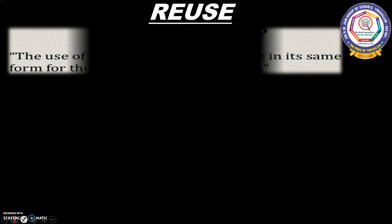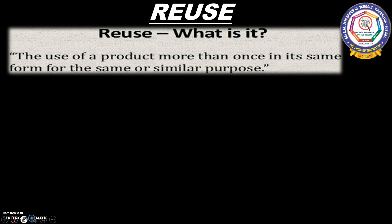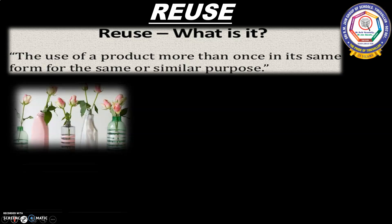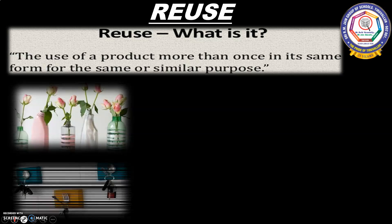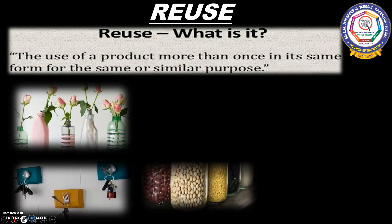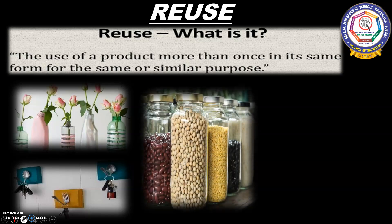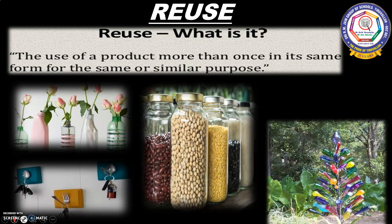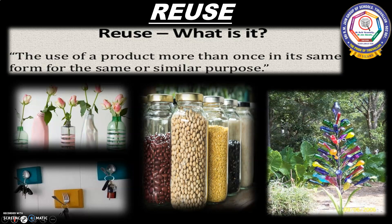Reuse. What is it? The use of a product more than once in its same form for the same or similar purpose. Glass and metal items can be washed and used again and again. If you have plastic jars and bottles, they can be washed and used for storing things.